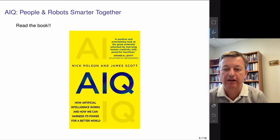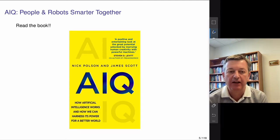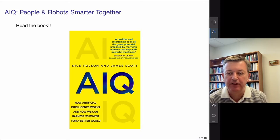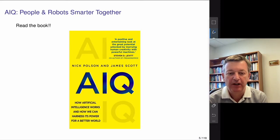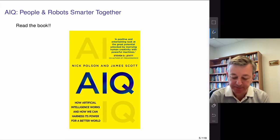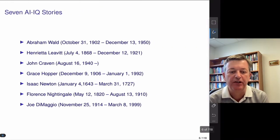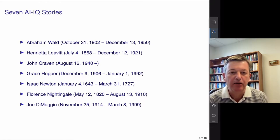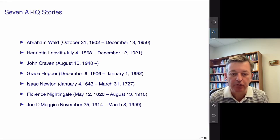Welcome to this course on Bayes and AI. There's a book that goes along with this course called AIQ, which I wrote with a good friend and co-author, James Scott. The book has essentially seven chapters and gives seven AI IQ stories, which you'll see throughout the course as well.